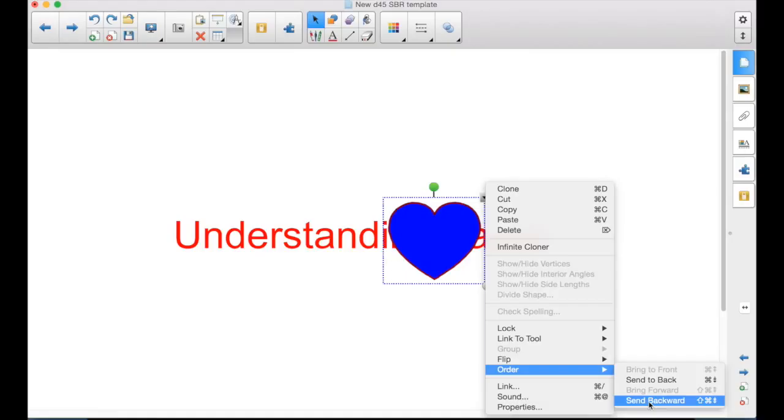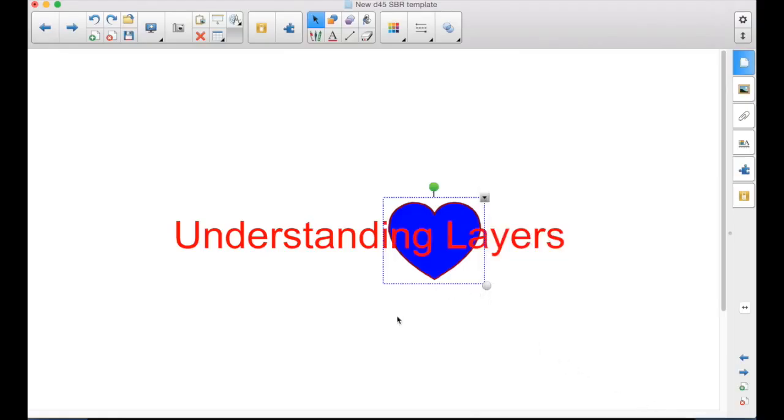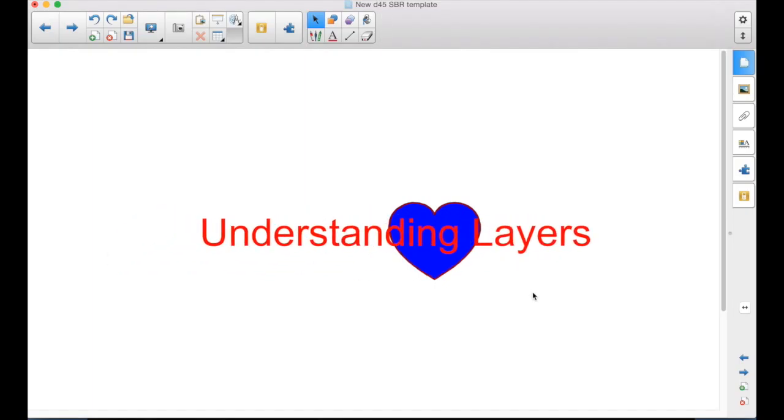You send backward until it's behind the one that you want it behind and in front of the layer that you want. If I send it backward, now the heart is the back layer and the text is the front layer. Basically, that's it.